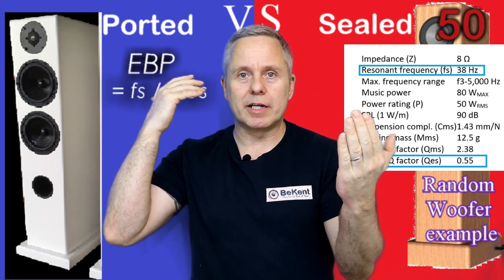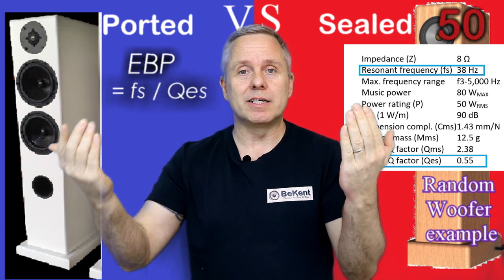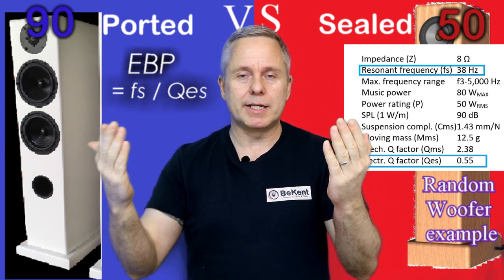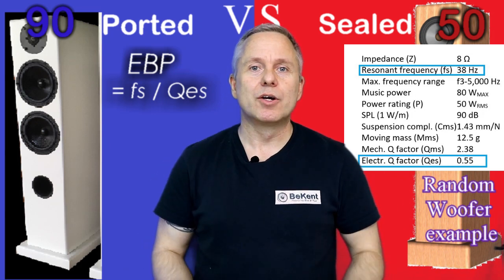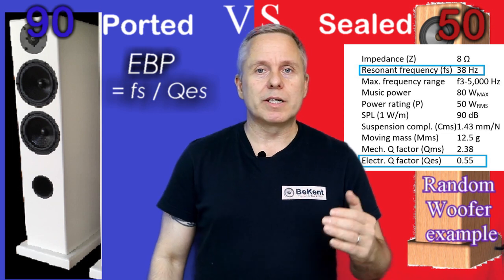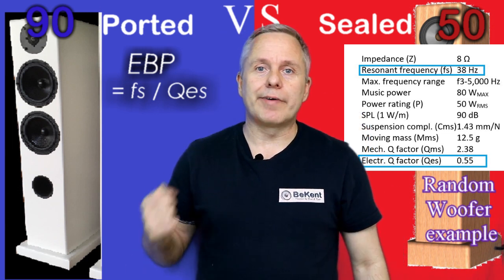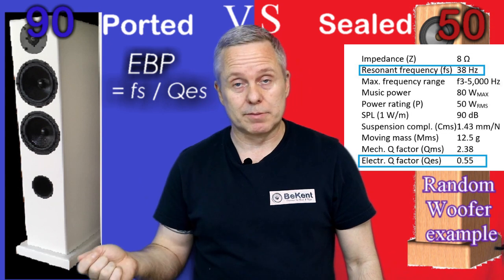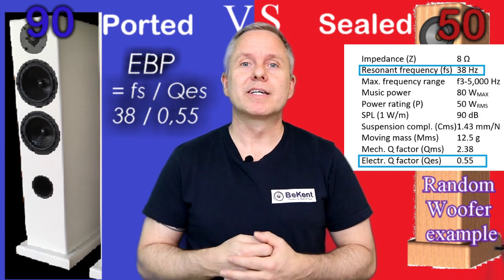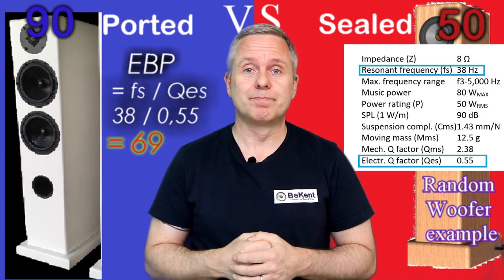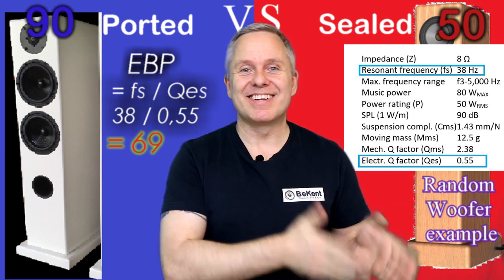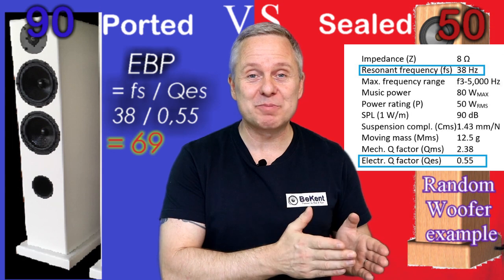From this, we can derive a scale: an EBP value of 50 is ideal for a closed box, and 90 is ideal for the vented box. To calculate EBP, take Fs and divide it by Qes. So 38 divided by 0.55 gives us 69, putting us right in the middle between 50 and 90.